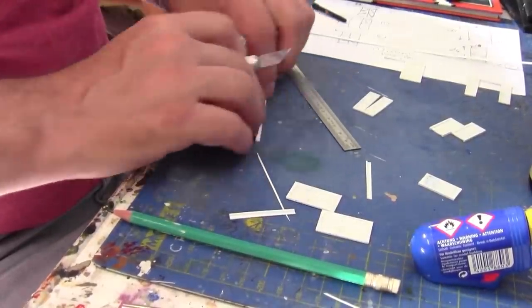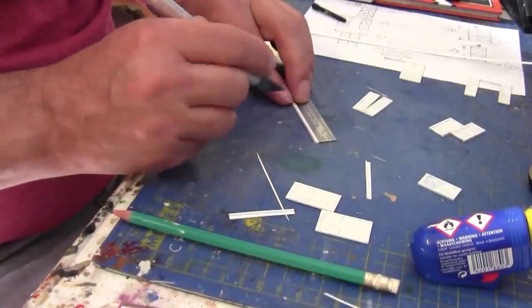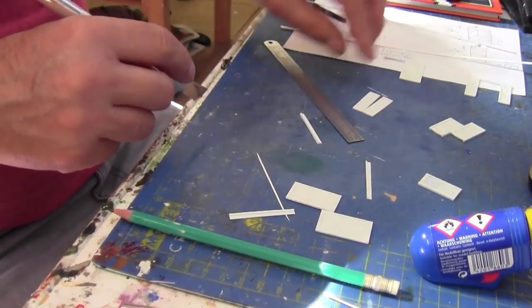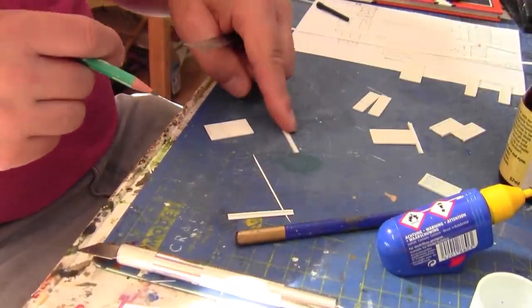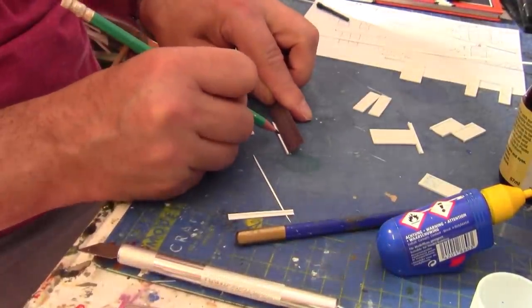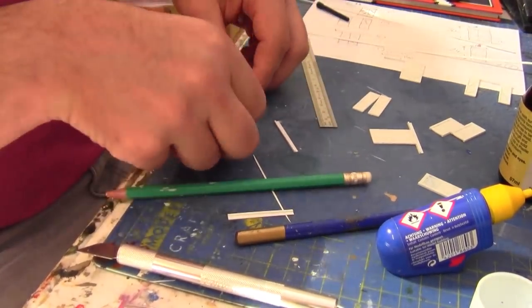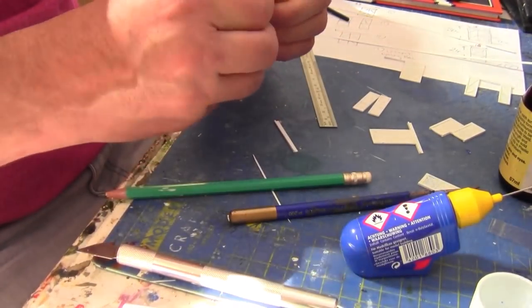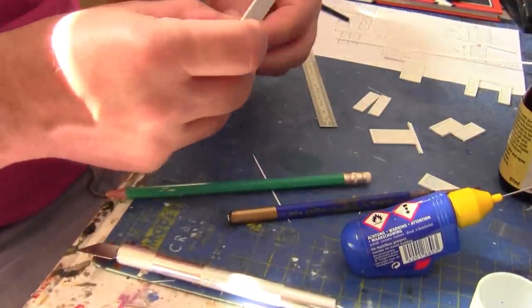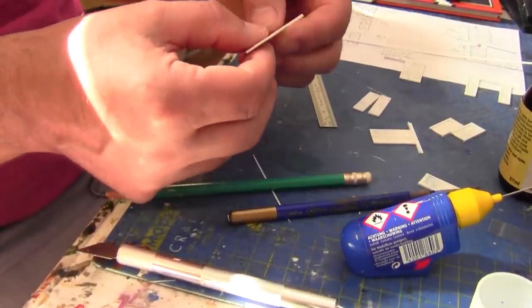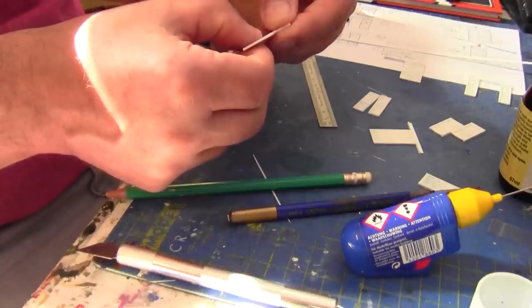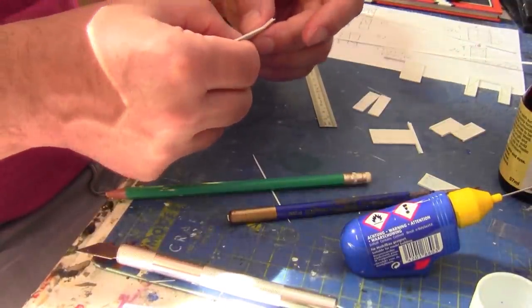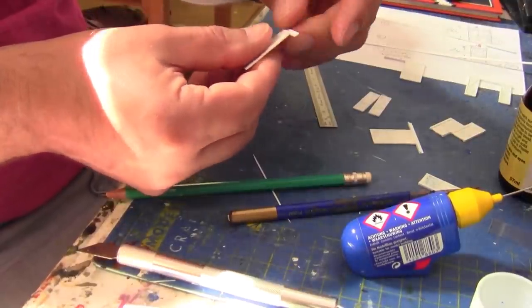Like so. Painstaking work this modelling innit. Right here we are again. As you can see I've just made the runners for the doors and what it is, it's 2.5 strip glued to a 1mm square strip to create the illusion of a door runner for the sliding doors.